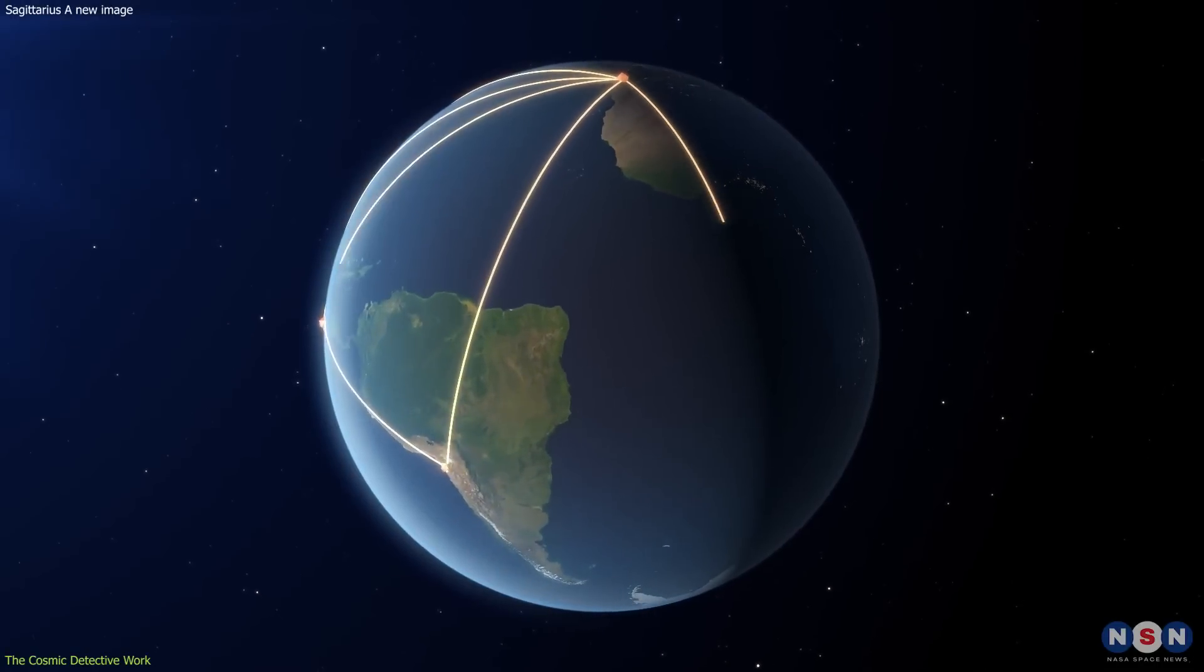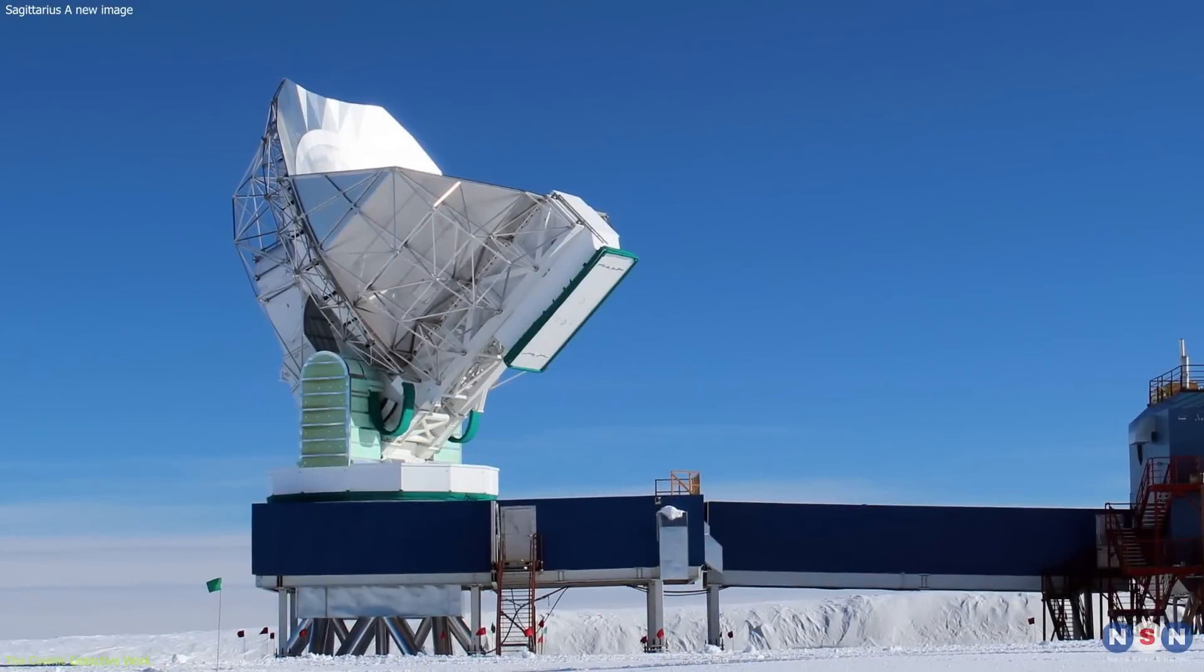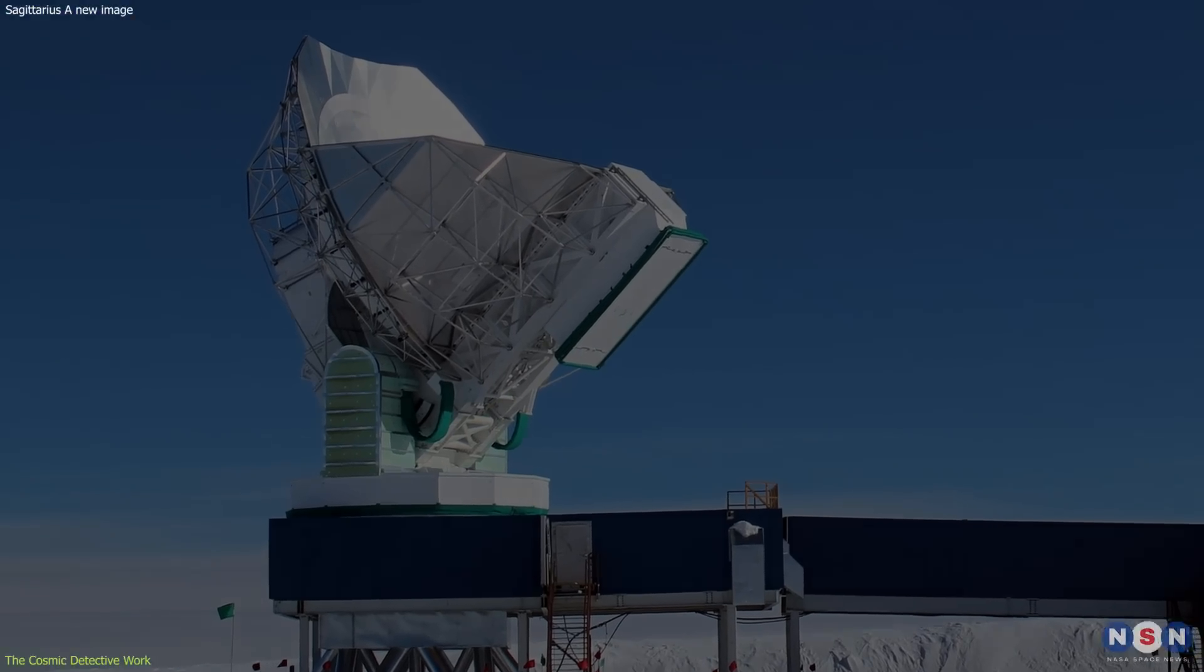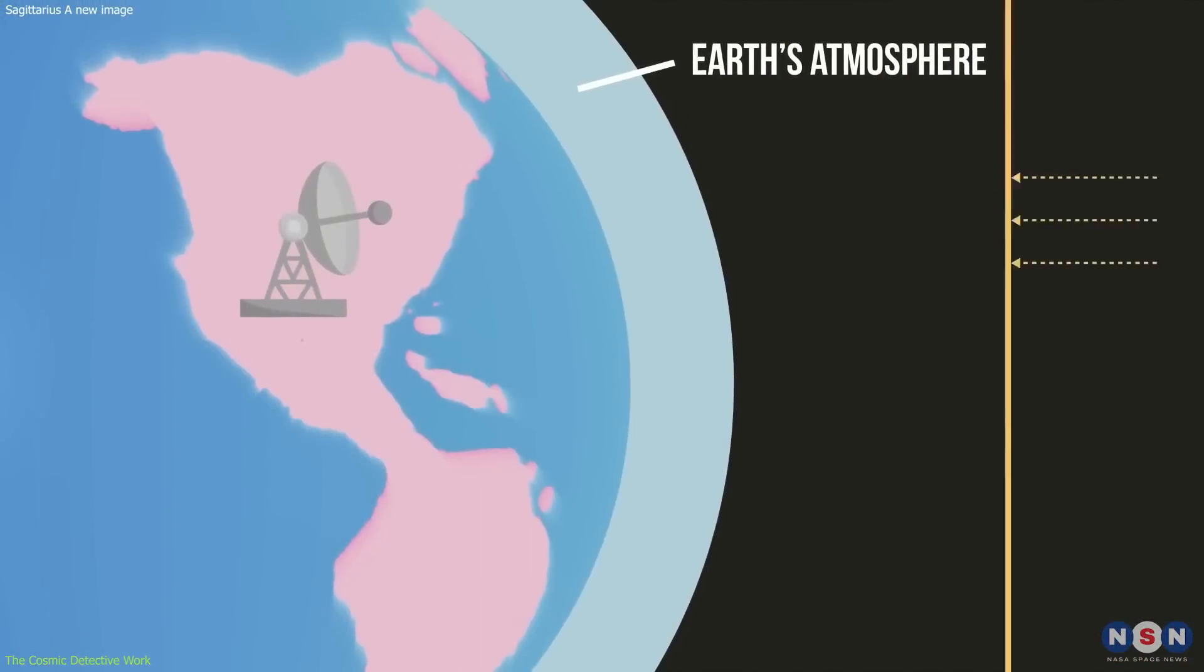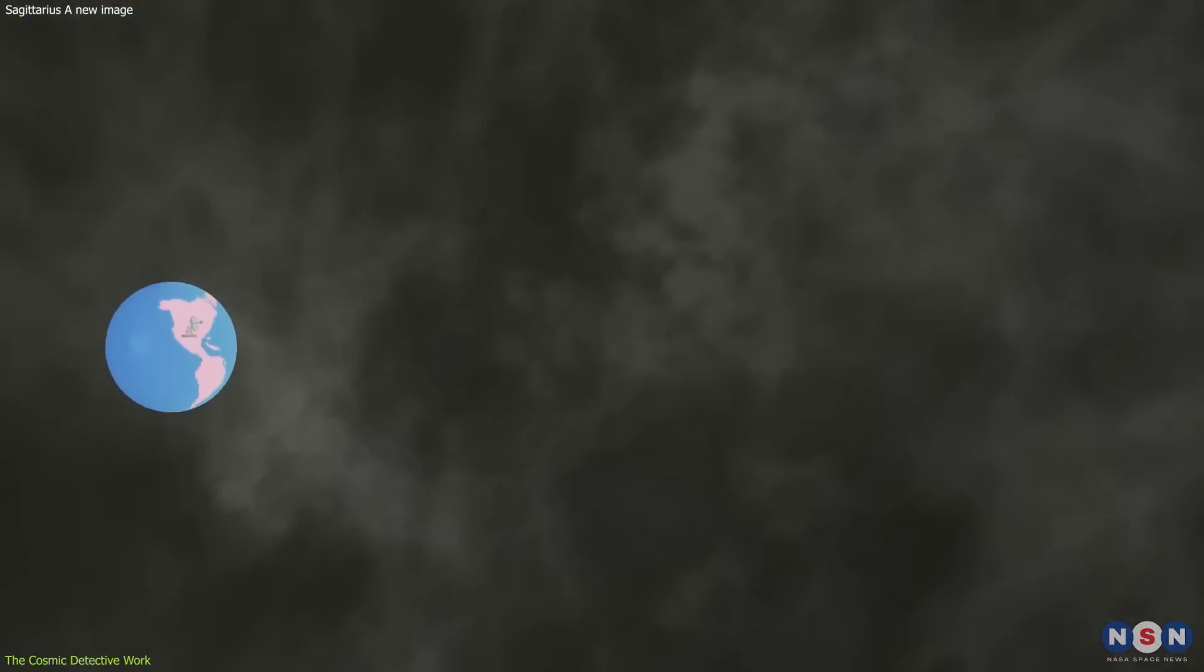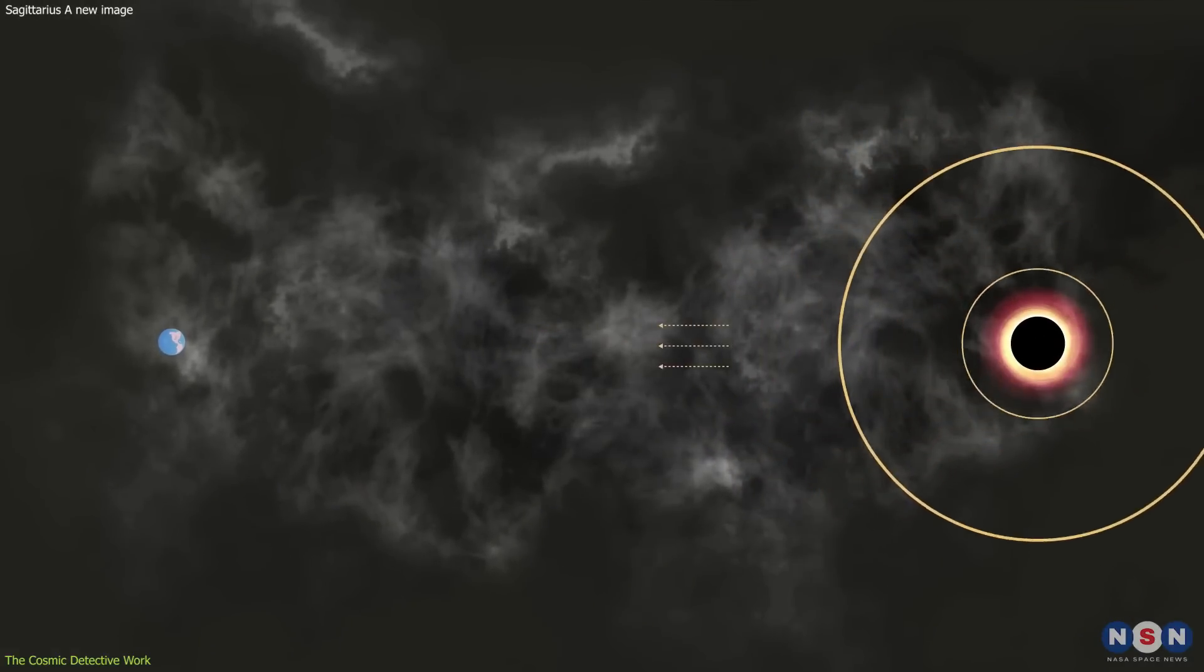By synchronizing radio dishes across the world, from the frozen expanses of Antarctica to the arid heights of the Atacama Desert, the Event Horizon Telescope achieved the resolution necessary to probe the environments of black holes.